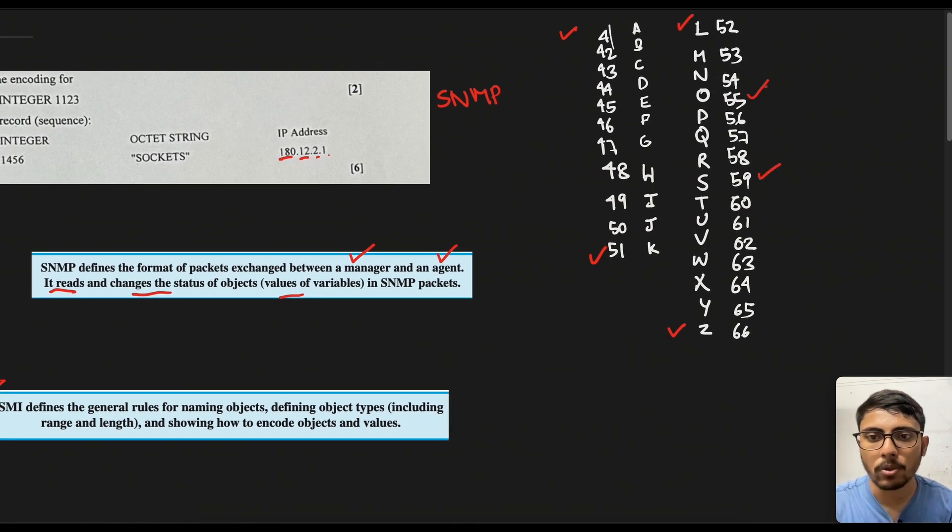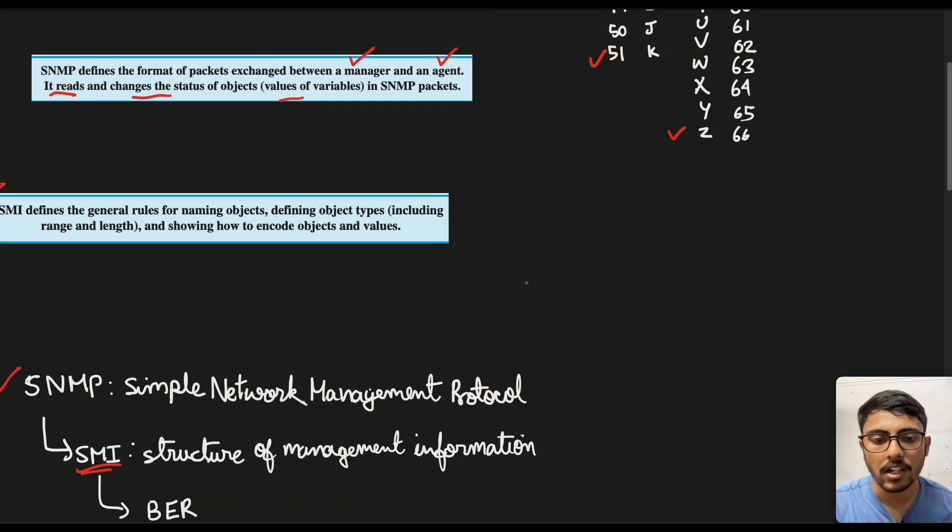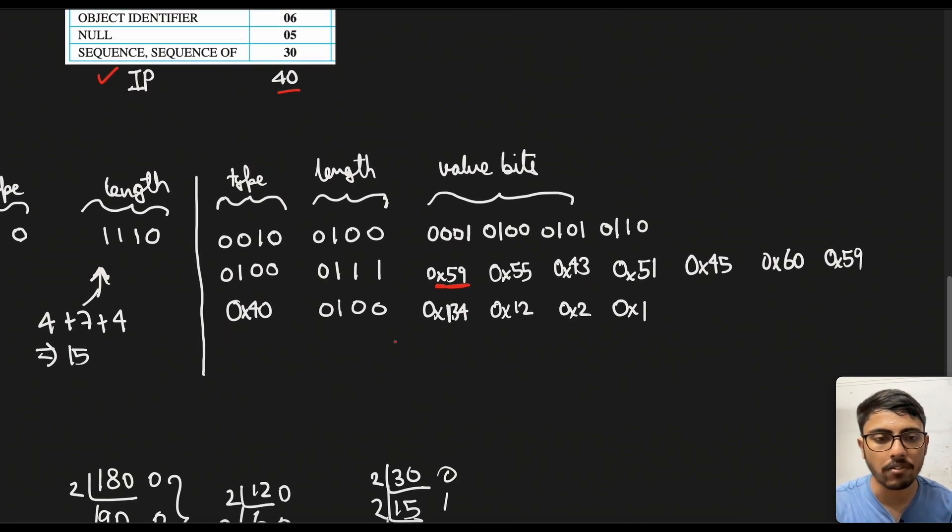So if we just go down, you see the numbers basically denote that particular hex value for the alphabet. So 59 corresponds to S, then O will correspond to 55, and sockets C is 43. So this is how it will work across entire world.